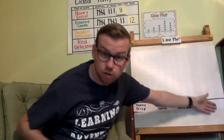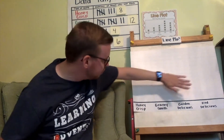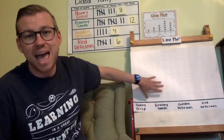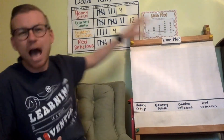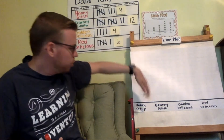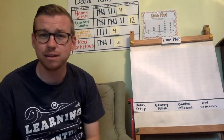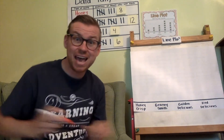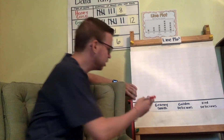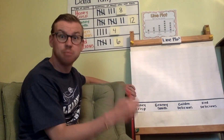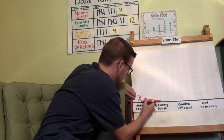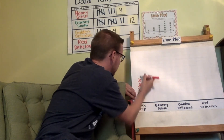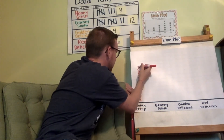I have all the apples across the bottom: Honeycrisp, Granny Smith, Golden Delicious, and Red Delicious. We're going to add X's on top of each apple to display how many people liked each apple. For Honeycrisp, I'm going to add eight X's. One, two, three, four, five, six, seven, eight.